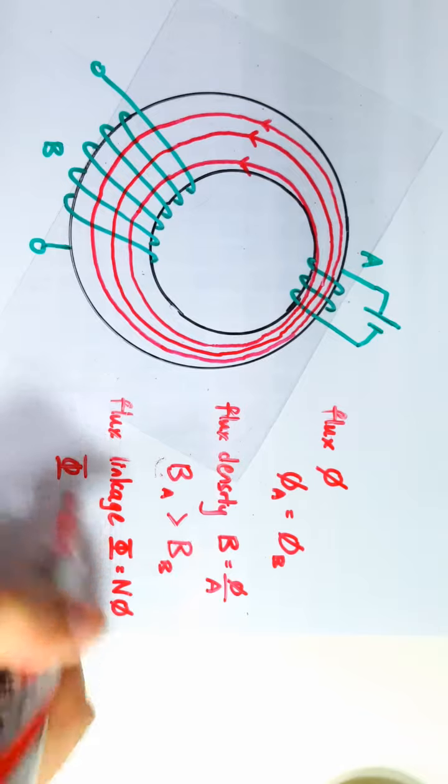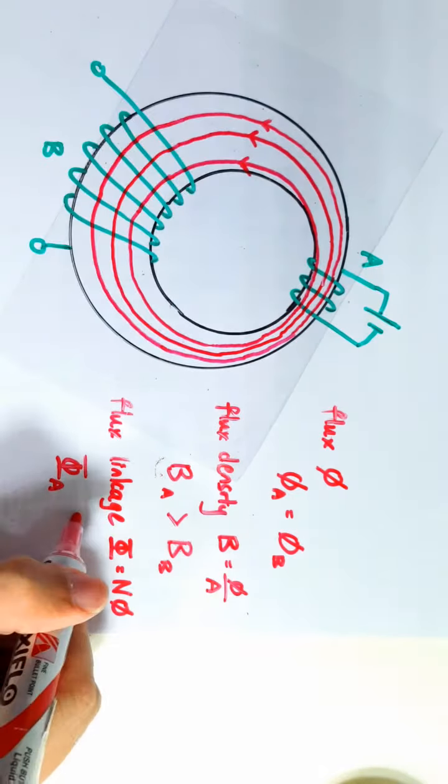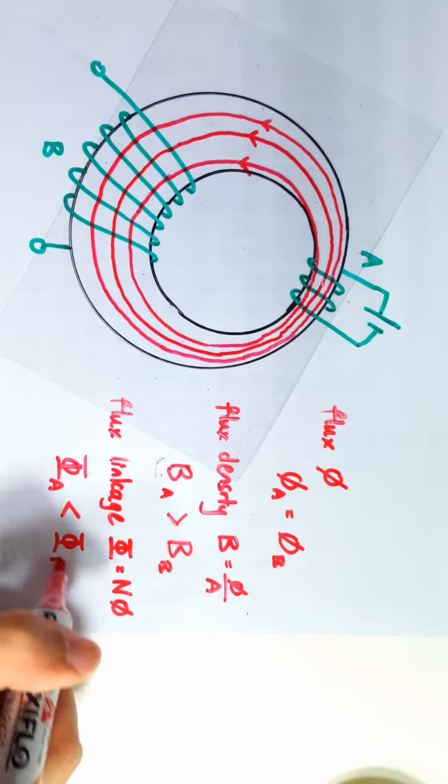Let me just write it down. So the magnetic flux linkage in this coil with less turns will be less than the magnetic flux linkage in this coil which has more turns.